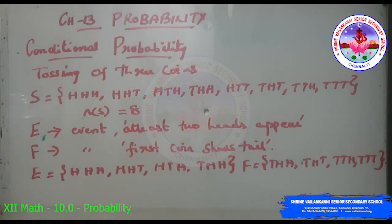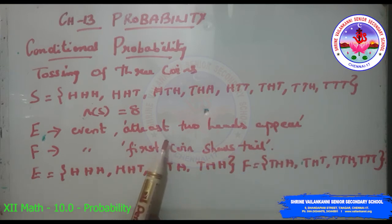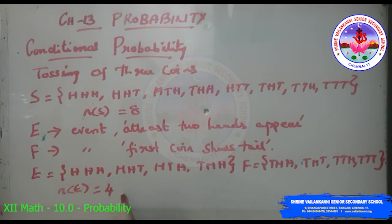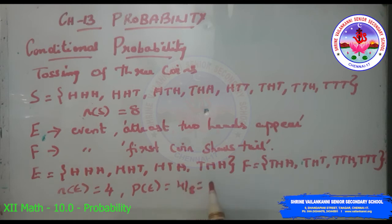Let E and F be two events. E is the event that at least two heads appear, so it may be two heads or more than two heads: HHH, HHT, HTH, and THH. So n(E) is four, and P(E) = n(E)/n(S) = 4/8 = 1/2.